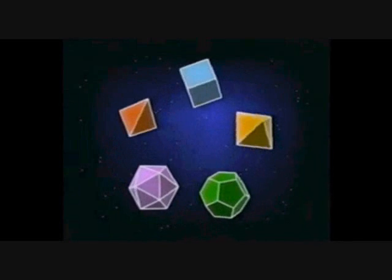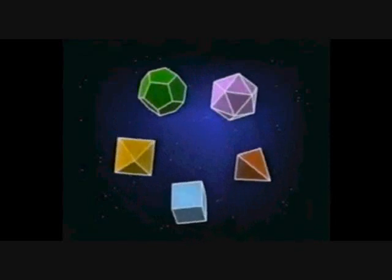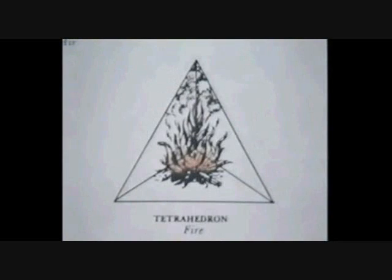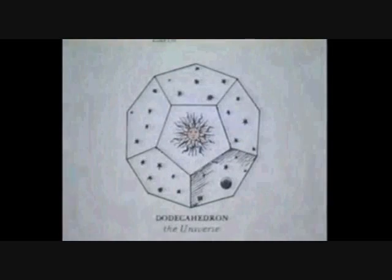The perfection of the Platonic solids led Plato to write that they must represent the elements thought at that time to make up the world. The tetrahedron was fire, the octahedron air, the icosahedron water, and the cube earth. The fifth solid, the dodecahedron, represented the universe itself.